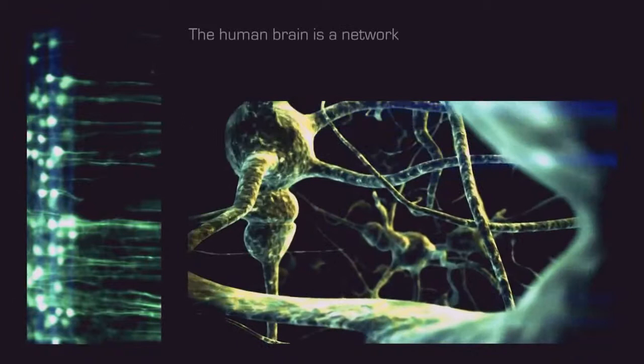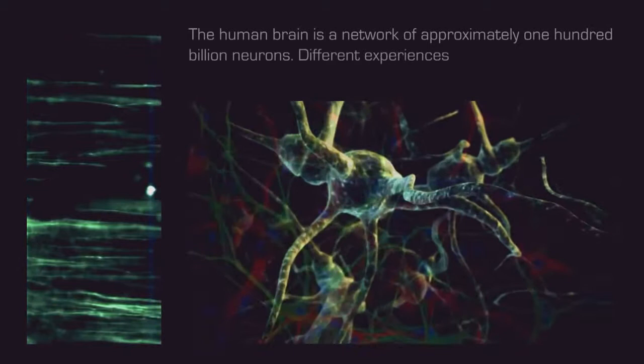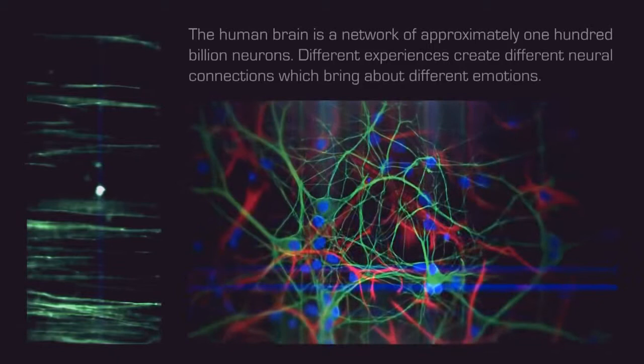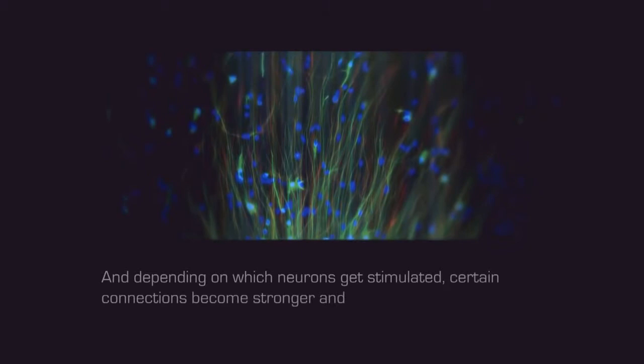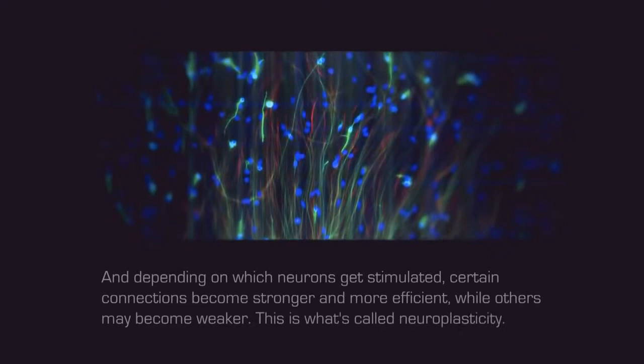The human brain is a network of approximately 100 billion neurons. Different experiences create different neural connections which bring about different emotions. And depending on which neurons get stimulated, certain connections become stronger and more efficient, while others may become weaker. This is what's called neuroplasticity.